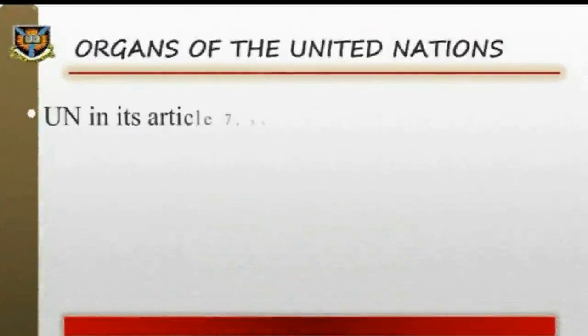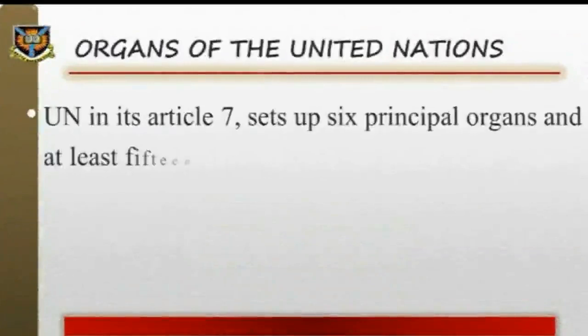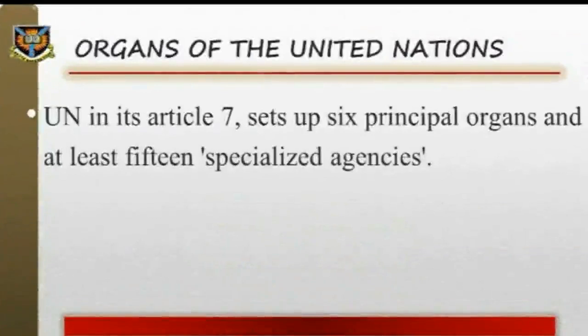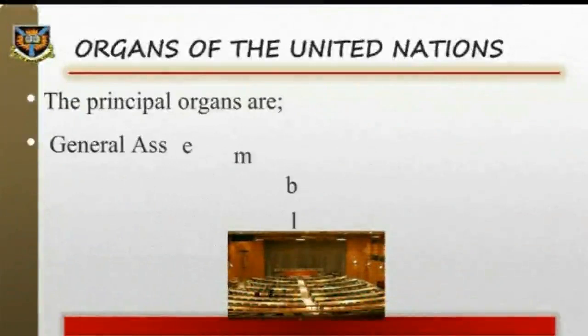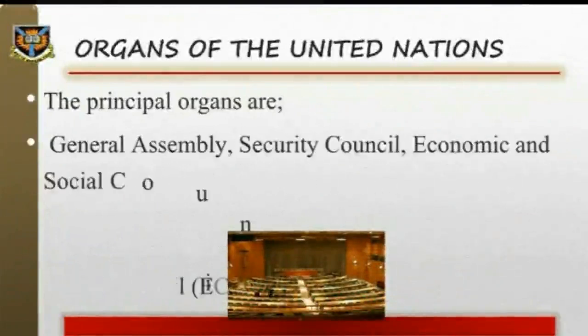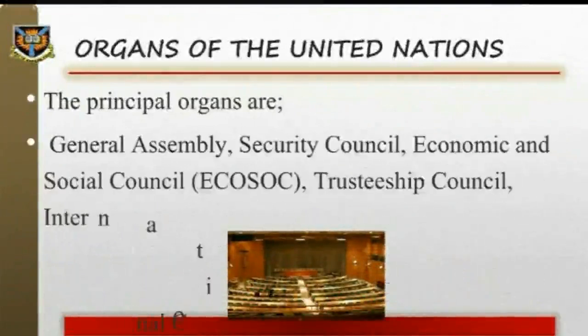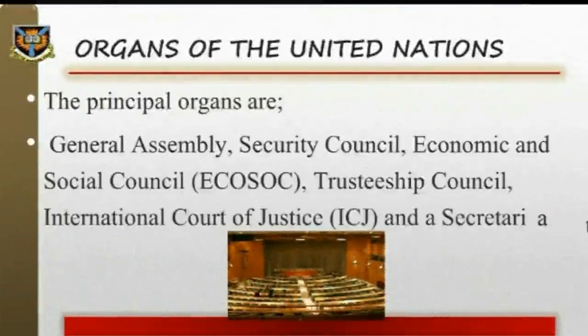Organs of the United Nations. The United Nations in its Article 7 sets up six principal organs and at least 15 specialized agencies. The principal organs are: (a) General Assembly, (b) Security Council, (c) Economic and Social Council, (d) Trusteeship Council, (e) International Court of Justice (ICJ), and (f) a Secretariat.